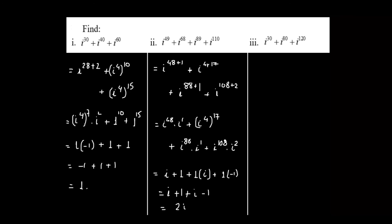For the third expression, i^30 plus i^80 plus i^120: i^30 equals i^(4×7) times i^2, which gives 1 times negative 1, equaling negative 1. i^80 equals i^(4×20), which is 1 raised to the power of 20, giving 1. i^120 equals i^(4×30), giving 1 raised to the power of 30, which is also 1. So we have negative 1 plus 1 plus 1, and the final answer is 1.